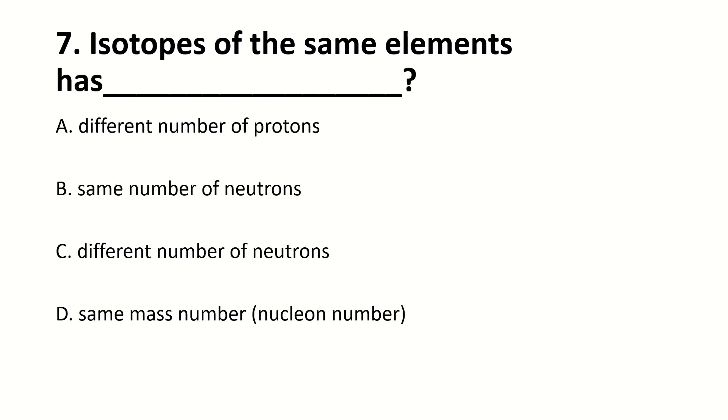Isotopes of the same element have? The right answer is C, different number of neutrons.